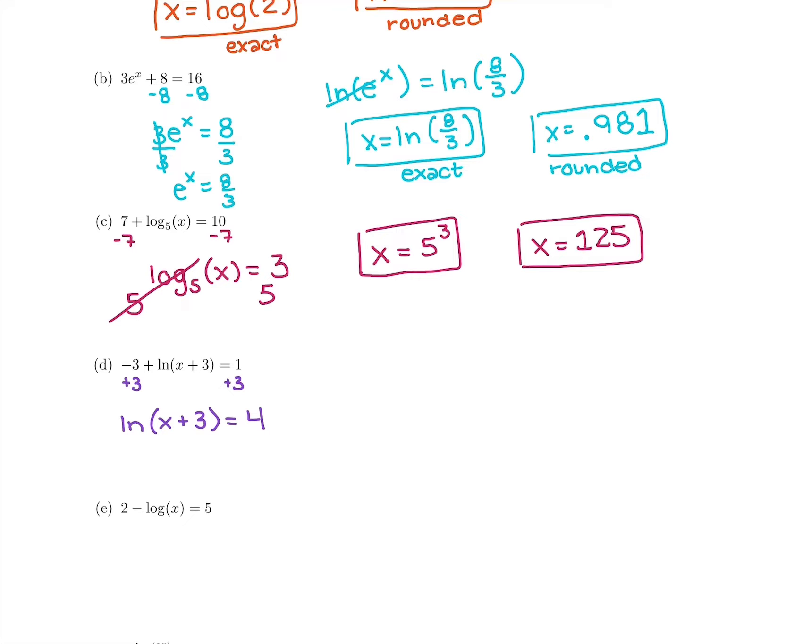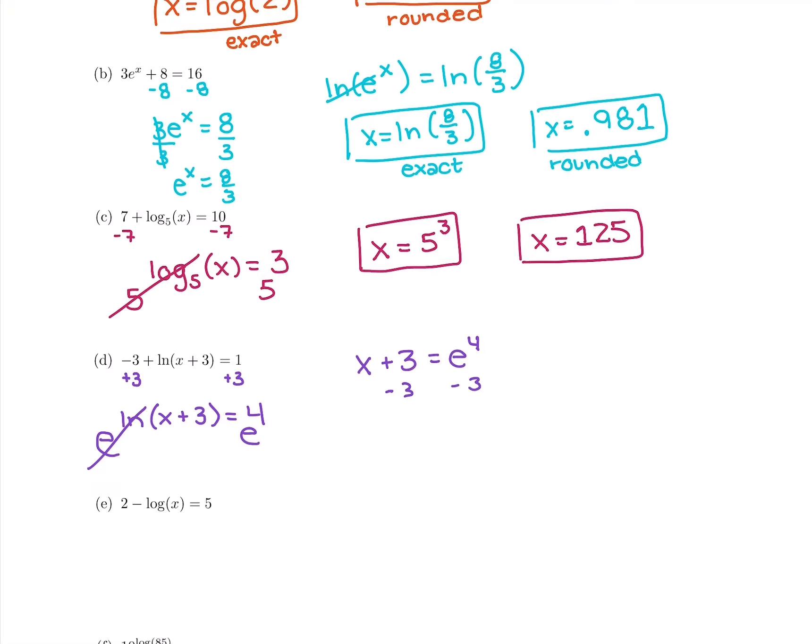Now I have ln on one side by itself. I have ln of x plus 3. So I'm going to take base e to cancel out with the ln, which is going to leave me with x plus 3 equals e to the fourth. I don't quite have x by itself yet because there's more than just an x inside the ln.